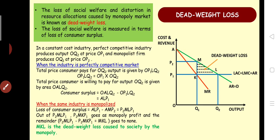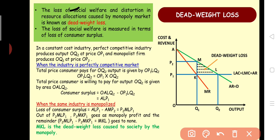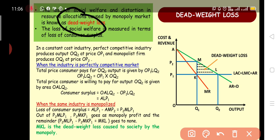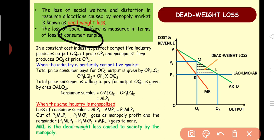Dead weight loss refers to the loss of social welfare and distortion in resource allocation due to the monopoly market. In a monopoly with price discrimination, whatever consumer surplus is reduced or lost — that is your dead weight loss. This diagram is for a constant cost industry.